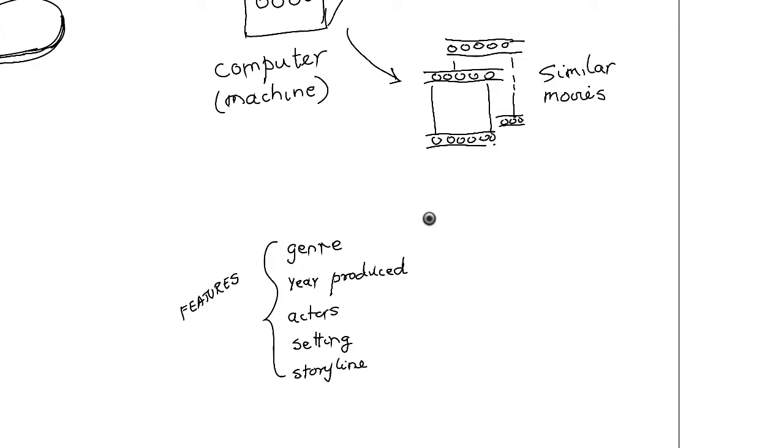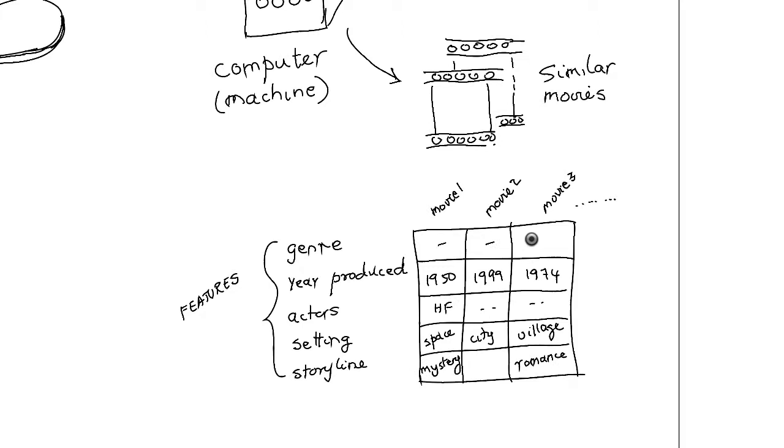The computer could then look through all the movies in Netflix's library collection and pick out the ones that closely resemble the one you liked. But unlike looking through a spreadsheet for an exact match, the computer can do an approximate match so it may pick out a recommendation where the genre and the storyline matches but nothing else does.